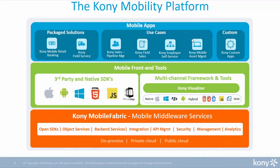The Kony Mobile Platform is typically three layers. You have your mobile middleware service or EMM down at the bottom, handling all your identity management, API management, integration through object services to your backends, analytics, and all your actual device and application management capabilities. Kony also provides mobile front-end tools to develop leading-edge, cutting-edge applications that are omnichannel across Apple iOS, Android, Windows, HTML5, as well as BlackBerry, etc.